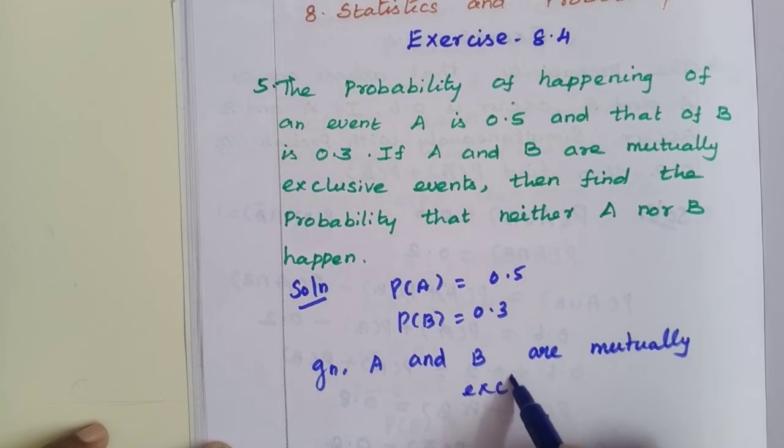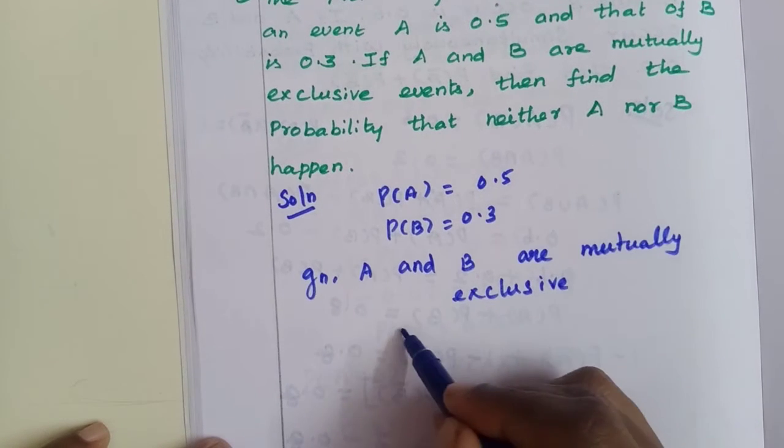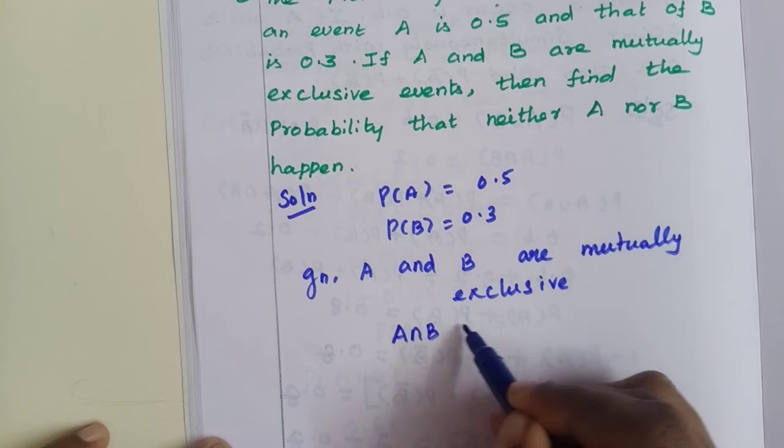Then A intersection B is equal to the empty set. A intersection B equals phi.